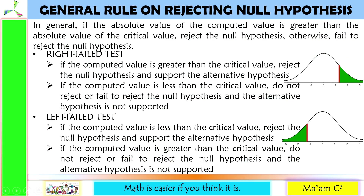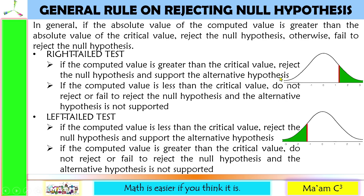Here is the general rule in rejecting the null hypothesis: if the absolute value of the computed value is greater than the absolute value of the critical value, reject the null hypothesis; otherwise, fail to reject. For a right-tailed test, if the computed value is greater than the critical value, it lies in the rejection region, so we reject and support the alternative hypothesis. If less than, we fail to reject.